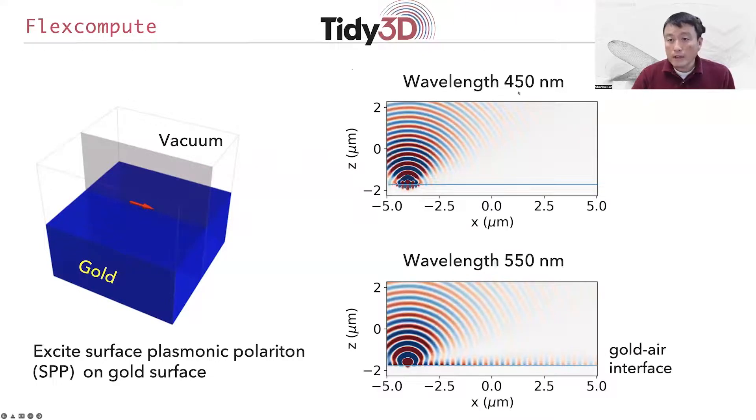When we choose a wavelength of 450 nanometers, this line here is the gold-air interface. You can see that the field basically radiates into vacuum because the gold essentially behaves like a mirror. That's perhaps what you might expect from your everyday experience of a metal. However, if you lower the frequency or increase the wavelength a little bit to 550 nanometers, now in this case, in addition to the radiation into vacuum, the dipole source here also excites a surface mode at the gold-air interface that propagates away.